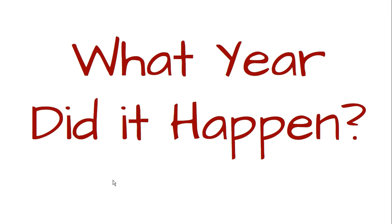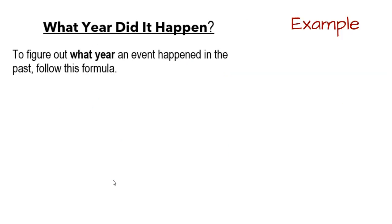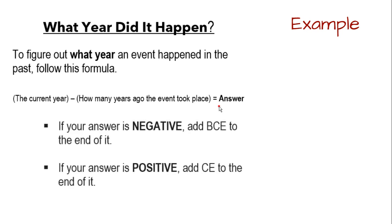What if I'm being asked what year did something happen? If that's the case, here's what I need to do. I have a couple of formulas to figure out what year an event happened in the past. Your formula again is going to start with the current year, 2021, and you will subtract how many years ago the event took place and you'll get your answer.